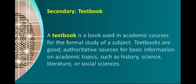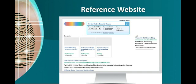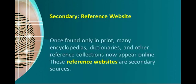Secondary: Textbook. A textbook is a book used in academic courses for the formal study of a subject. Textbooks are good, authoritative sources for basic information on academic topics such as history, science, literature, or social sciences. Secondary: Reference Website. Once found only in print, many encyclopedias, dictionaries, and other reference collections now appear online. These reference websites are secondary sources.